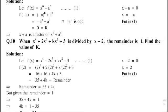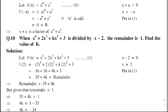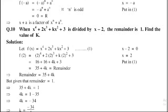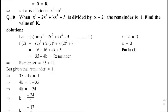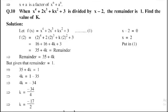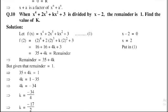1 minus 35 is equal to minus 34. Dividing by 4 on both sides, k equal to minus 34 divided by 4. Simplifying: 2 times 17 equals 34, so k equal to minus 17 divided by 2, which is the required solution.